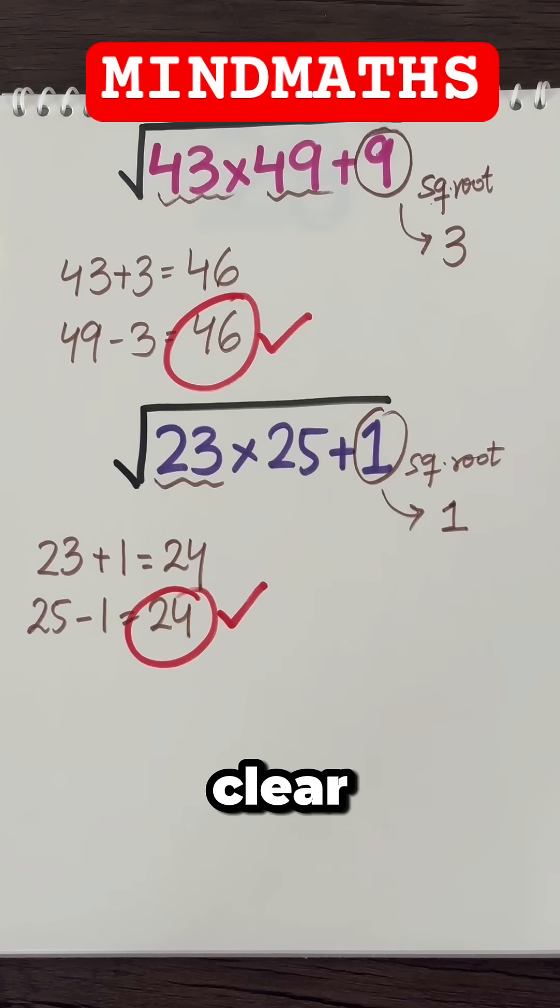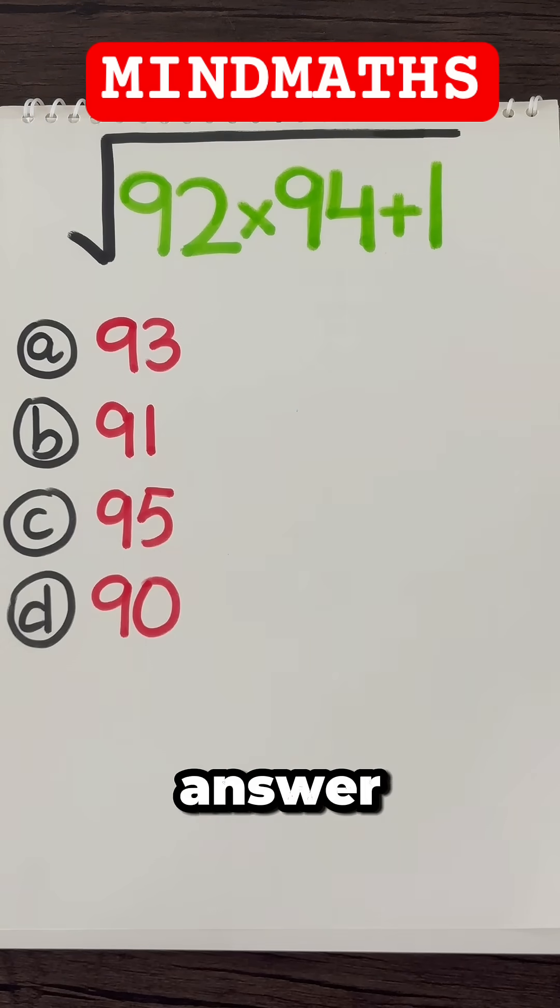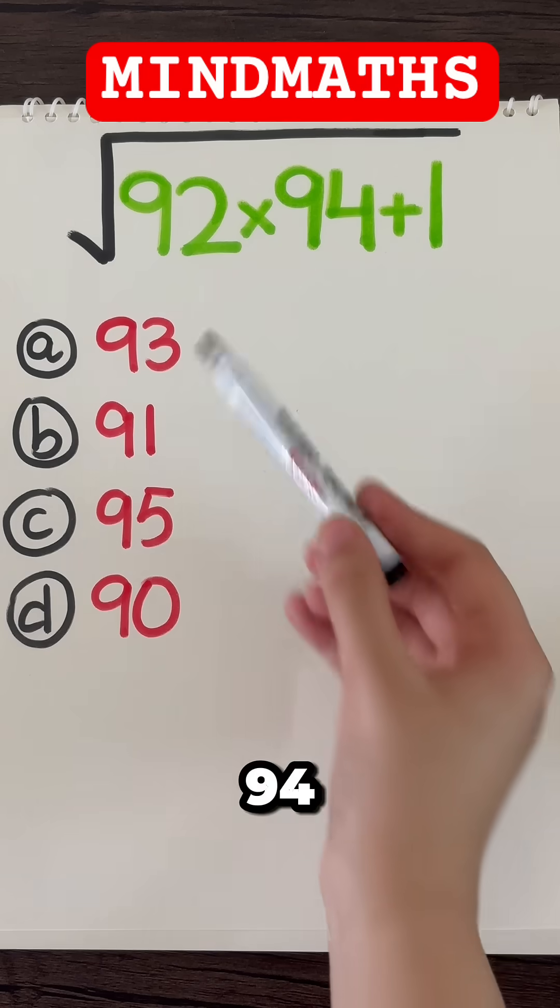Now that every concept is clear, let's go back to our original question. So what's the answer of square root of 92 into 94 plus 1?